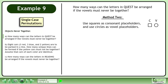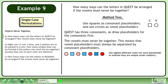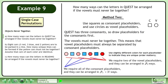Use squares as consonant placeholders and circles as vowel placeholders. QUEST has three consonants, so draw placeholders for the consonants first — use slightly different colors for each placeholder to indicate they are unique, as order matters. The vowels must never be together, meaning vowel placeholders must always be separated by consonant placeholders. We require all of the consonant placeholders, arranged in 3P3 equals 3 factorial ways. We require two of the vowel placeholders, arranged in 4P2 ways. Three factorial times 4P2 equals 72 — the same result we obtained earlier.